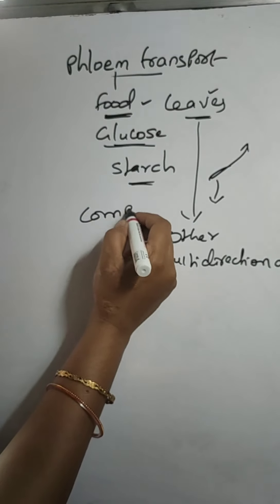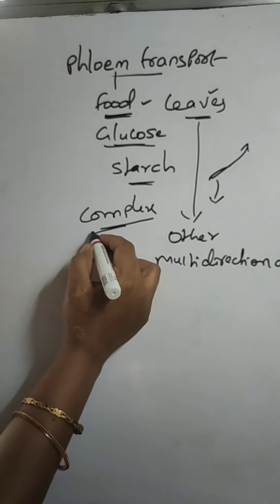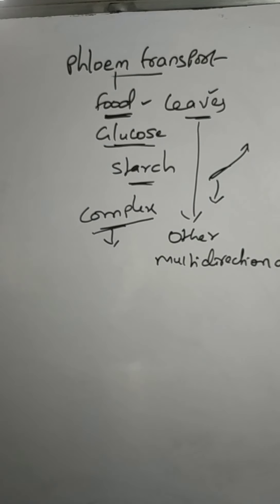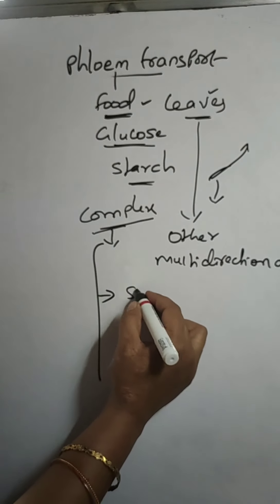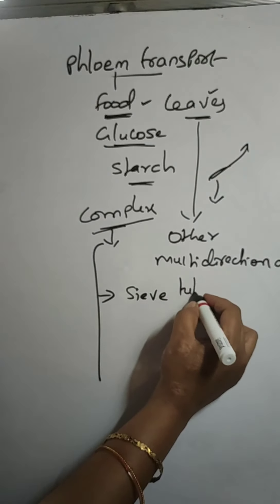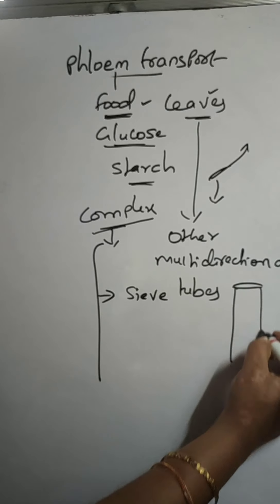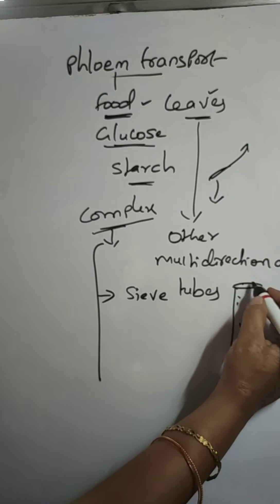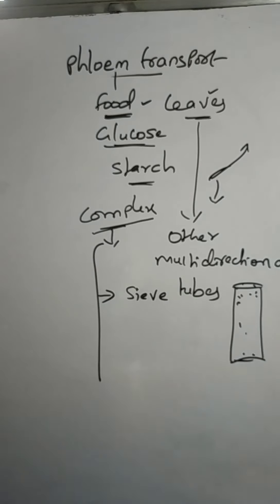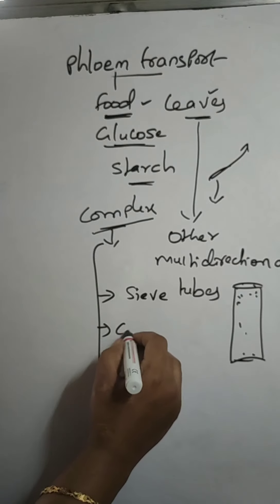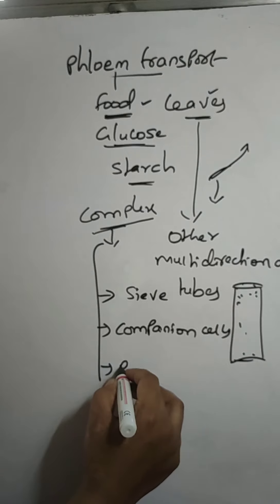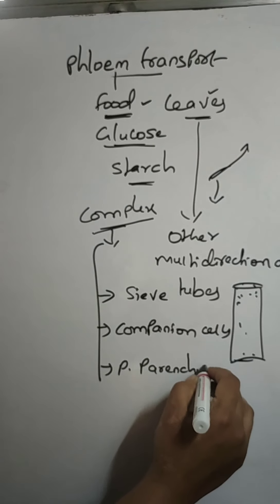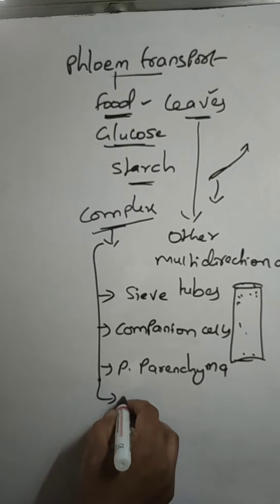Phloem is a vascular tissue and it is actually a complex vascular tissue. Complex means it is made up of many different types of cells. Phloem is made up of four different types of cells: sieve tubes, which are long tube-like structures made up of sieve cells with perforations — pores through which food is transported — and the next one is companion cells, phloem parenchyma, and phloem fibers.